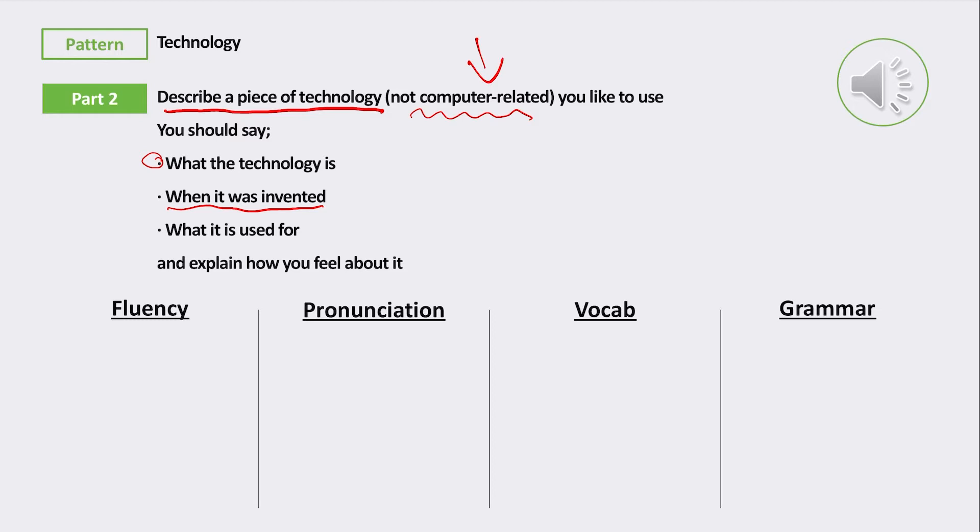When you're making a guess, you can say 'it was around something' or use hedging language like 'I'm not really sure, but maybe it was, maybe they were invented in the 1900s.' Any kind of guess—it's the English they're more interested in, rather than the facts.